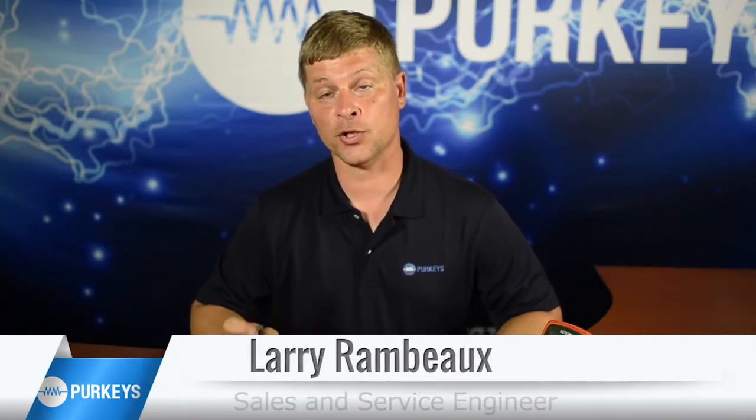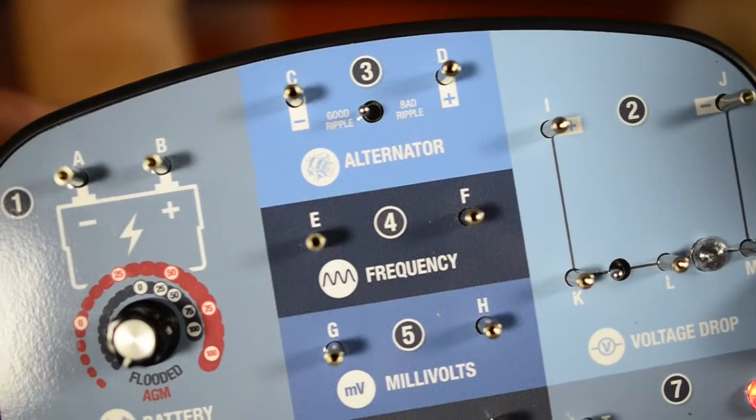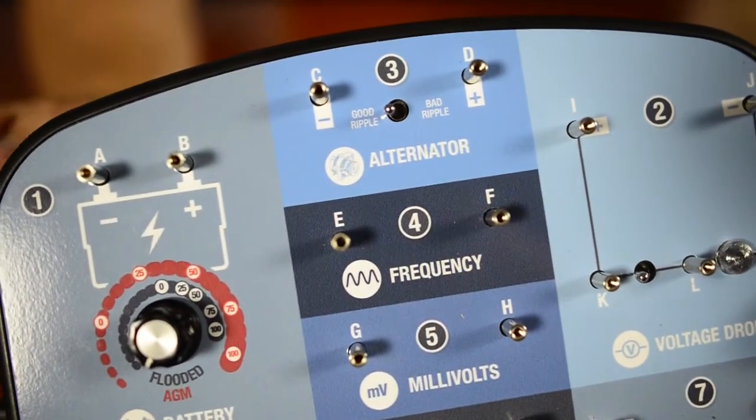The last section of the board we're going to talk about is pulse width, hertz, and frequency. Pulse width modulation is something that really came out first when we started seeing daylight running lights.